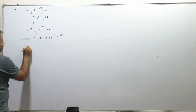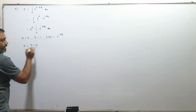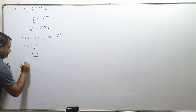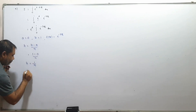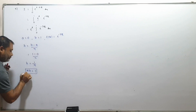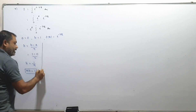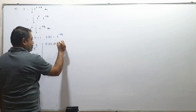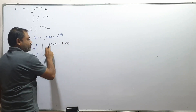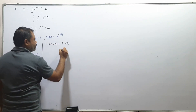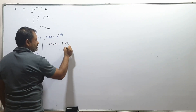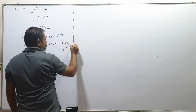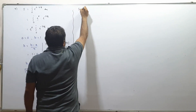Now we take h equals (b minus a)/n. b equals 1, a equals 0, so h equals 1/n, meaning nh equals 1. Now f of (a plus i·h): since a equals 0, f(i·h) equals e^(minus 3·i·h). So f within x is e^(minus 3x), giving e^(minus 3·i·h).